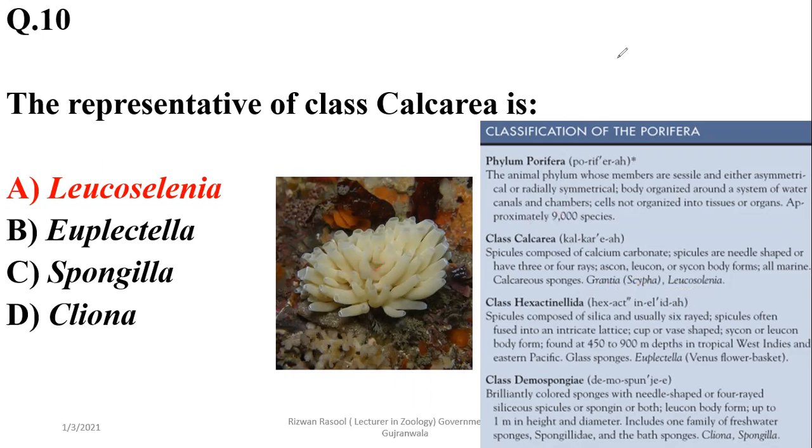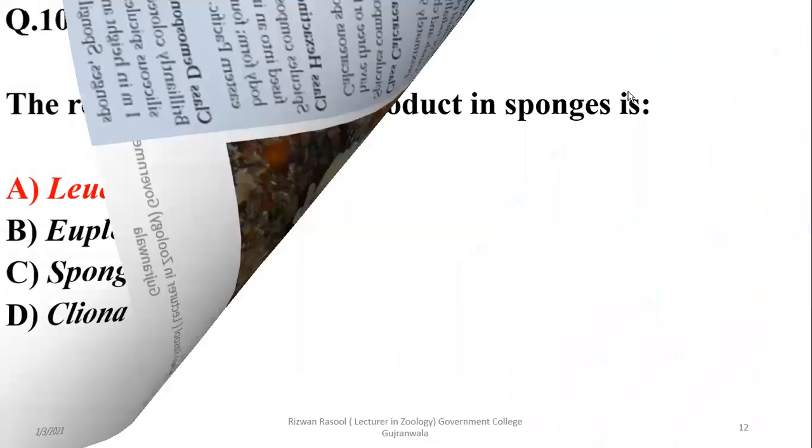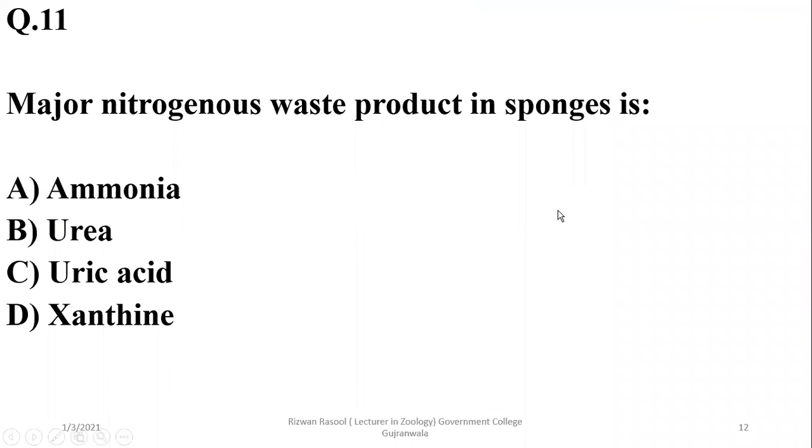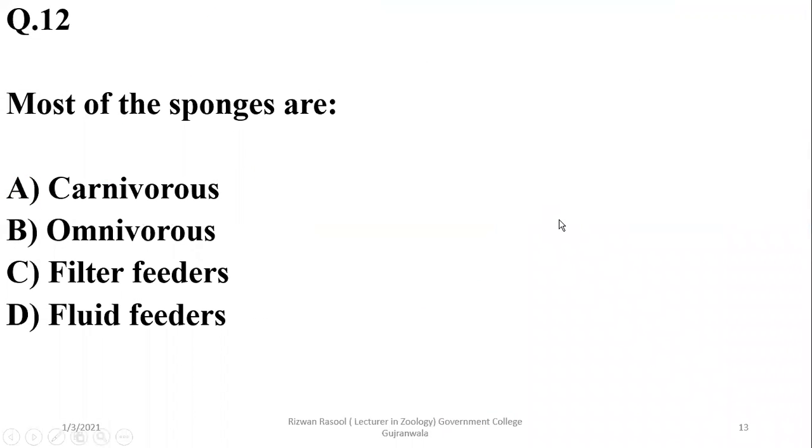Number eleven: Major nitrogenous waste product in sponges—they are ammonotelic and have the simplest organization as well as the simplest waste product, which is ammonia. So alpha is the right option.